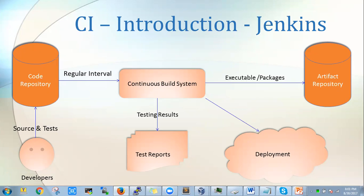Using the continuous build system we can build the project and save it into executables or packages. At the same time, if any errors or problems are found, they are saved into the testing result and we move back to solving that issue and continuing integration. If the integration needs more development, it is sent back to the developers who rewrite the code and push it to the repository again. We then build it on the continuous build system — if an error is found we report it; if it is a successful build we save it as an executable package and continue with the deployment process.